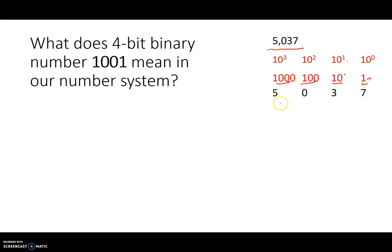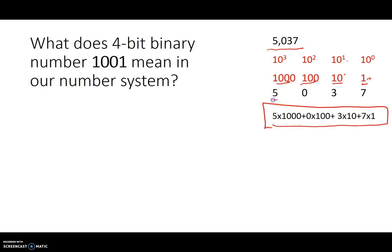So basically, we can write 5037 as a collection of each digit multiplied by the weight at its place. That's how we represent numbers in our number system. 5037, if we break it up, is basically a collection of weights as powers of 10 and the digit in its place. Why powers of 10? Because in our number system we count from 0 through 9 — a total of 10.